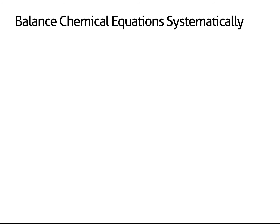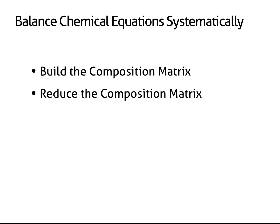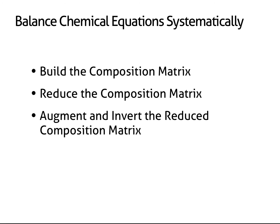I've described a systematic method for balancing any chemical equation. Given a bit of practice, the steps are easy to learn by anyone familiar with basic arithmetic. Begin by building the composition matrix for the equation. Then, reduce the composition matrix with row operations. Augment the reduced composition matrix and invert the result. Finally, assign coefficients by reading the right-hand column of the inverted matrix.